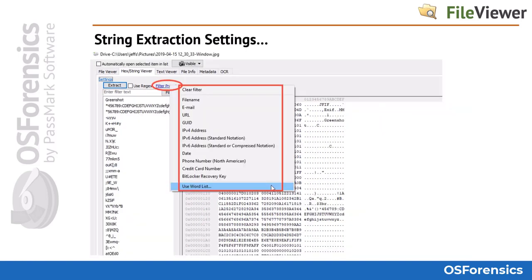Users can quickly choose to filter the results by file name, email address, URLs, GUIDs, IP addresses, phone numbers and credit card numbers, and even BitLocker recovery keys or a supplied word list. This is one of the quickest and easiest ways to obtain useful information from RAM dumps or other memory-type related files.